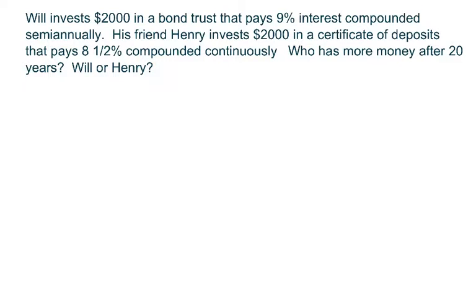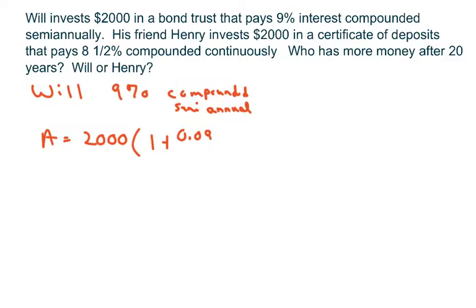We have Will and Henry, and we want to see who has more money, Will or Henry, after 20 years. So, Will, we're going to do him first. First, he has 9% compounded semi-annually. So A equals 2,000, and it's 9%, so it's 1 plus 0.09. This is twice per year, and it's 2, so that's going to be 40 years, so 2 times 20, 40 years, or 40 times it's calculated. And we get 11,632.73.